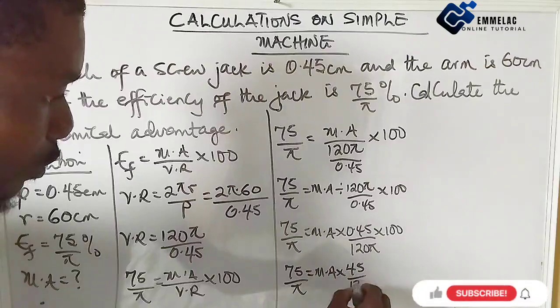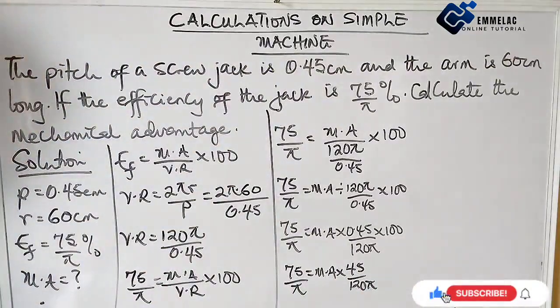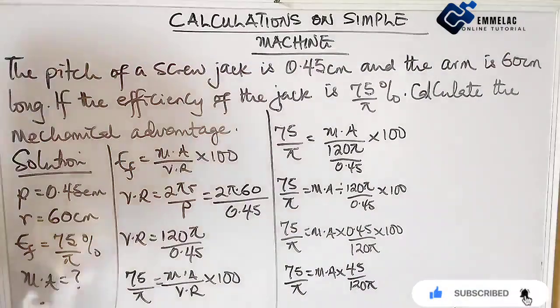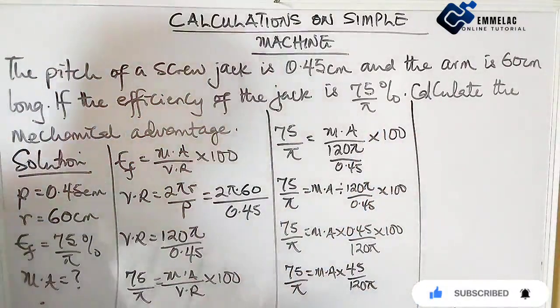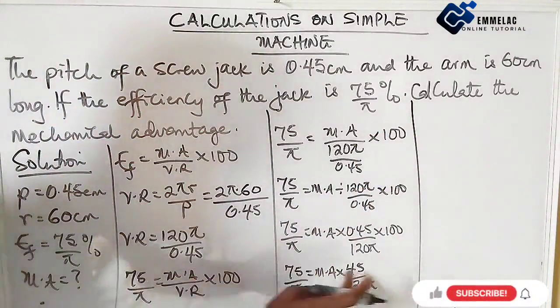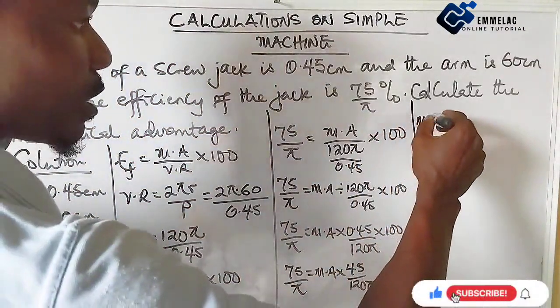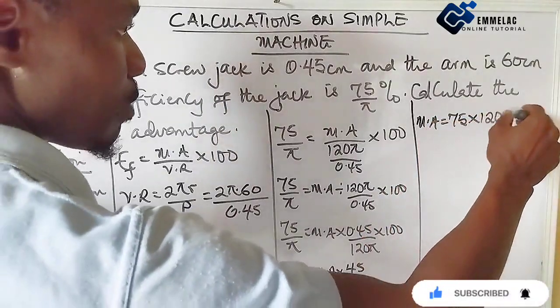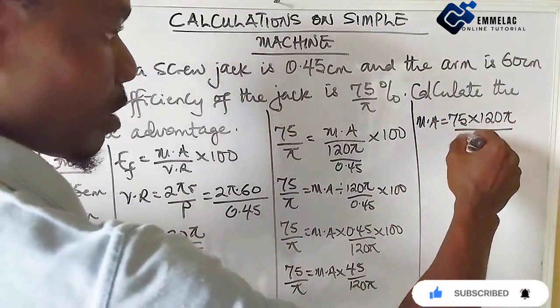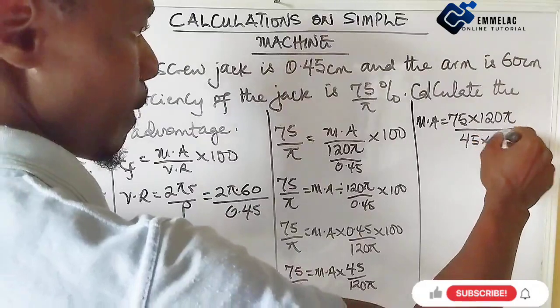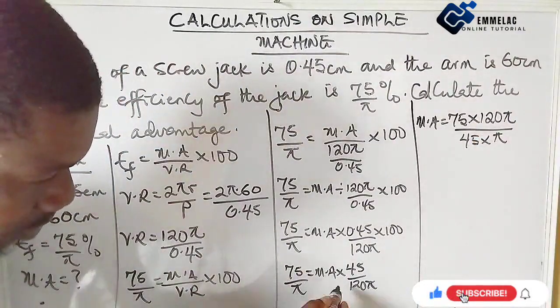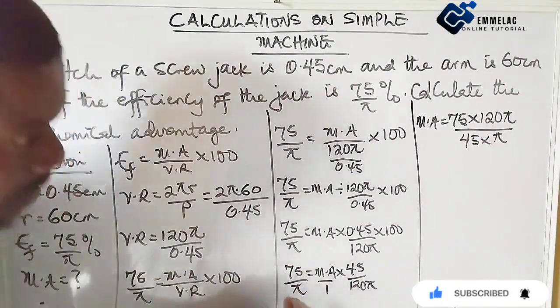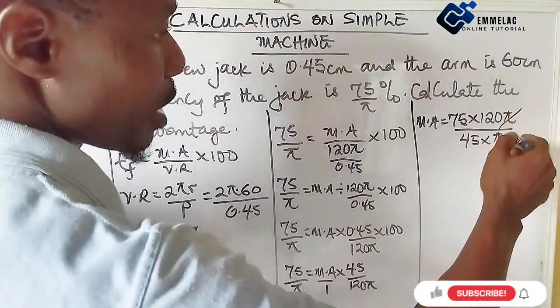Now moving further, since we are looking for the mechanical advantage, this can give us 75 over π equals mechanical advantage times 0.45 times 100, which gives us 45 over 120π. Now do a cross multiplication that will help us to ease the expression. We multiply this through, so our mechanical advantage will now give us 75 times 120π over 45 times π.